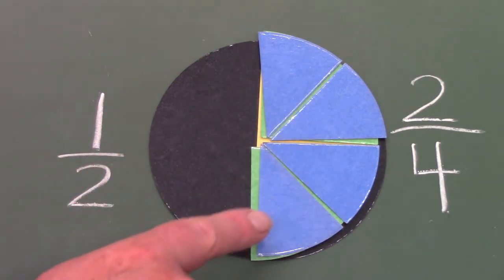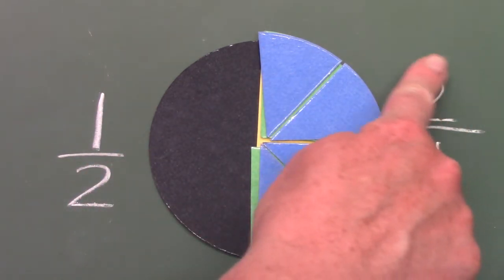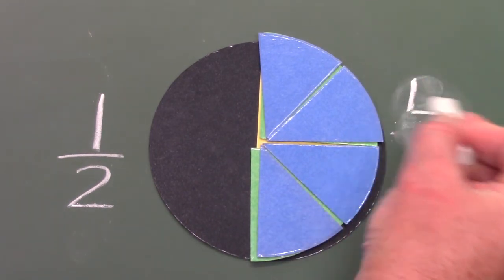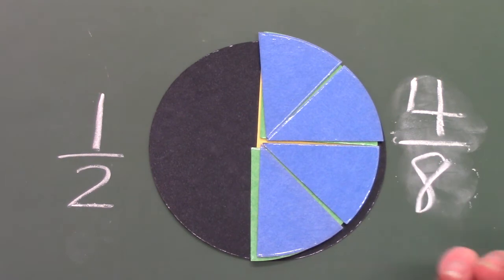Did you guess that it was going to be four? Four. Let's change this. Four out of the eight pieces is equal to one-half.